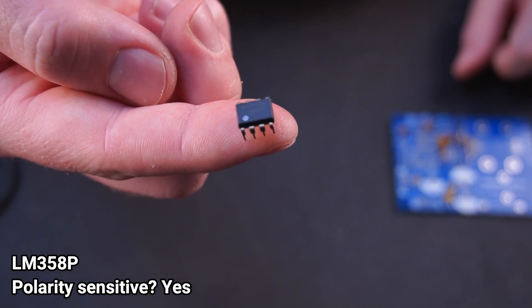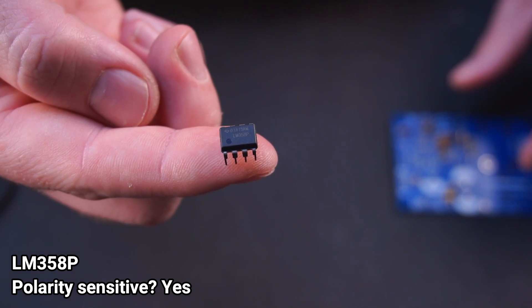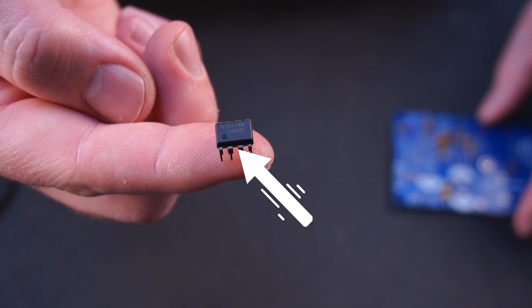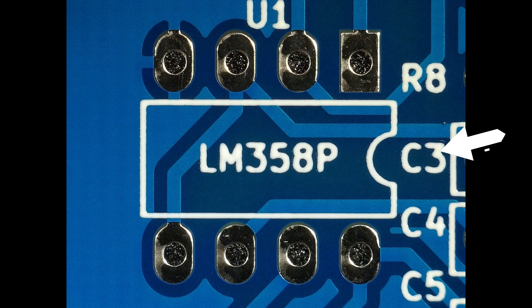Here is the LM358 dual op amp. To correctly orientate this component, pay attention to this little circle on top. This circle should be at the same end as the notch printed on the board.